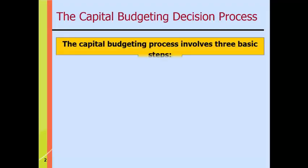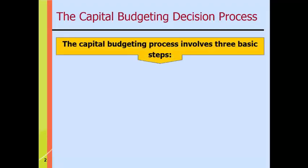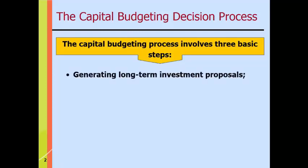The capital budgeting decision process has three basic steps. First, we have to come up with some investment ideas — projects A, B, and C. That might be expanding our own plant, launching a new product line, expanding into a new market area, acquiring another company, and so on.